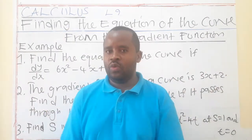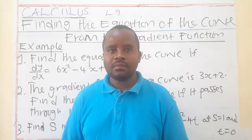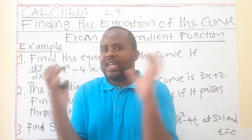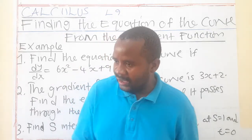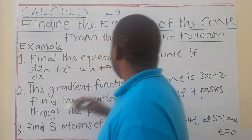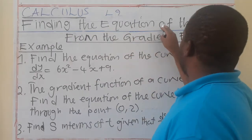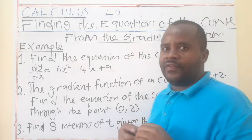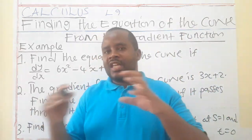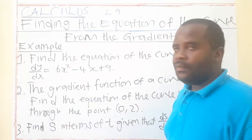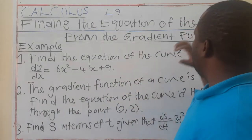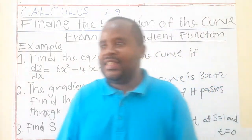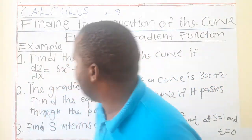We want to see how we can marry the two. If you know how to integrate and you know how to differentiate, there are times where these two can be linked to produce something. What is it that one produces? We want to produce an equation of a curve, given the gradient function.